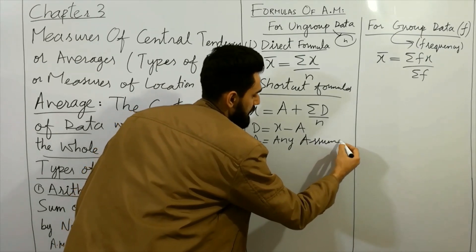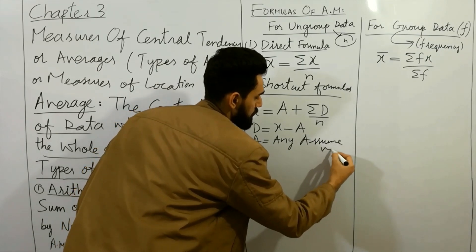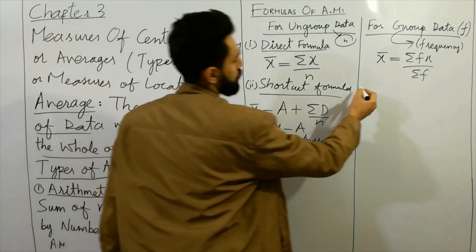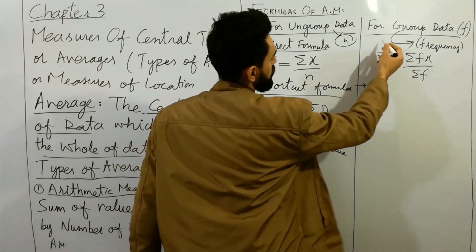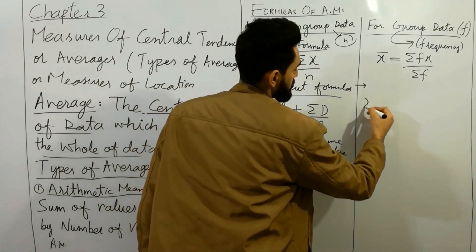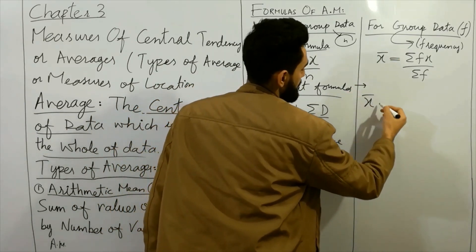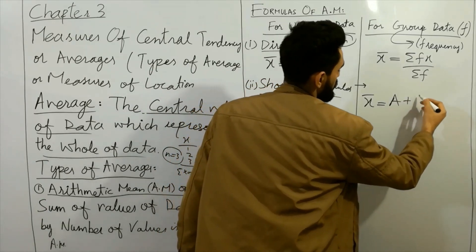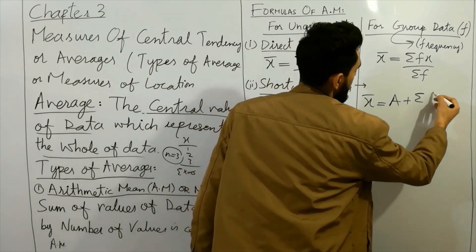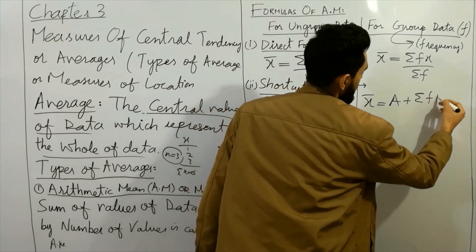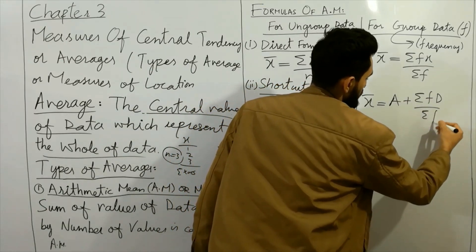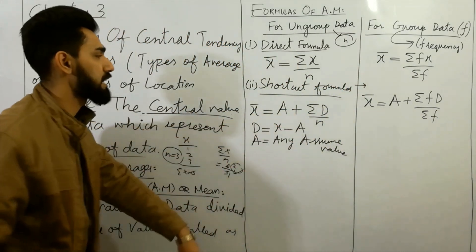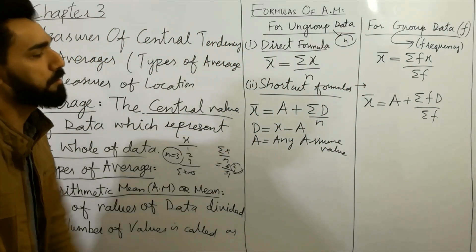A is any assumed value. The shortcut formula for grouped data is: x̄ = A plus ΣfD divided by Σf.